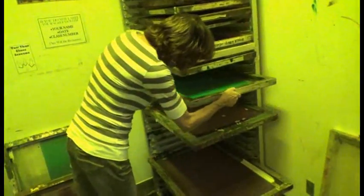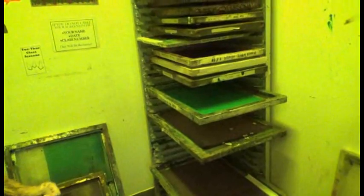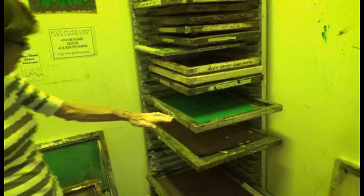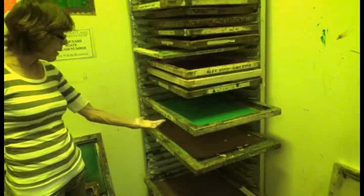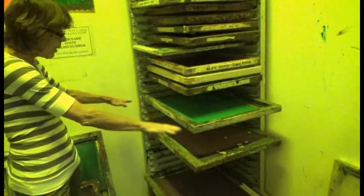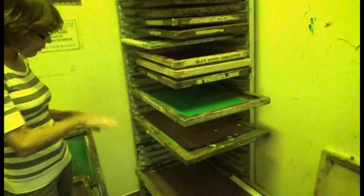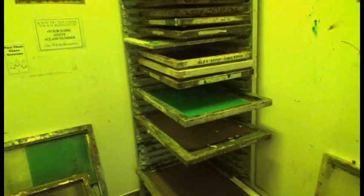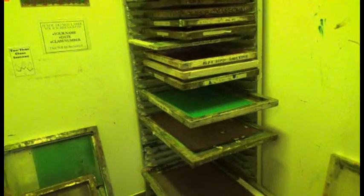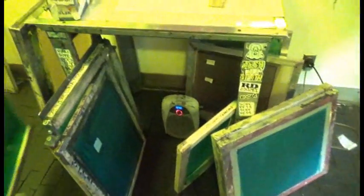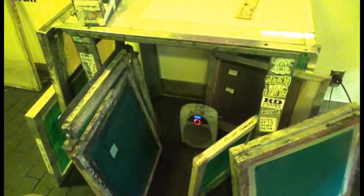The screens are placed in a device like this where they can dry horizontally with the print side, the flat side down, so that layer of emulsion on the bottom becomes slightly thicker and totally encapsulates the screen mesh. That will take about three or four hours to dry under good conditions. It's nice and warm in this room, and we have a little space heater.